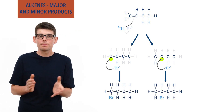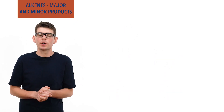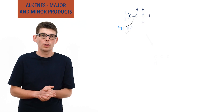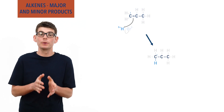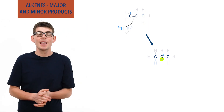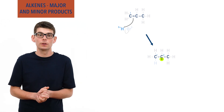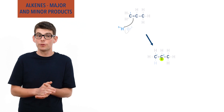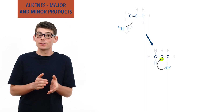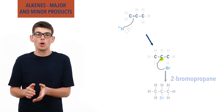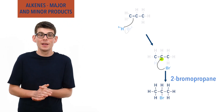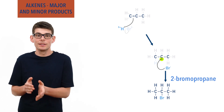For example, if propene reacts with hydrogen bromide, HBr, we can see that if the hydrogen bonds to carbon 1 in the propene molecule, carbon 2 will end up with a positive charge in the intermediate — a secondary carbocation. The bromide ion formed in step 1 will then bond to this carbon 2, and as a result, 2-bromopropane will be formed, as the bromine group is bonded to carbon 2 in the chain.